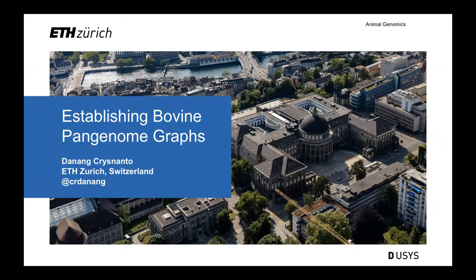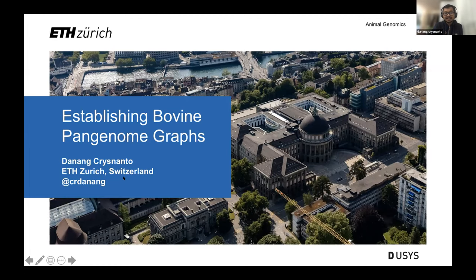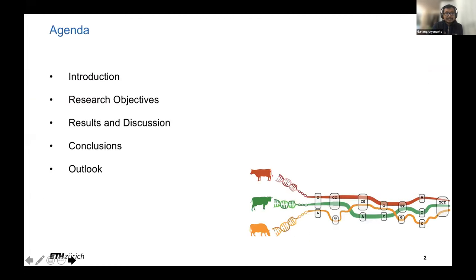Yeah, thank you very much for our invitation for this talk. So today, I'm going to talk about my PhD project on establishing bovine pan-genome graphs. My name is Danang. I'm doing my PhD at ETH Zurich. My presentation will start from introduction, then continue with objectives, then I will explain the results and discussion, and finally I will come up with conclusions and outlooks.